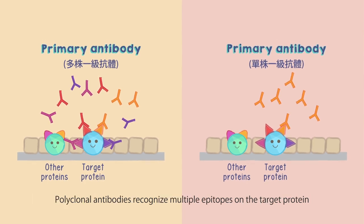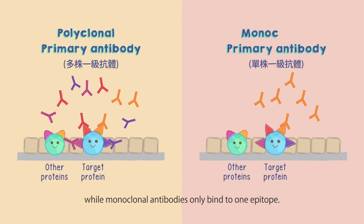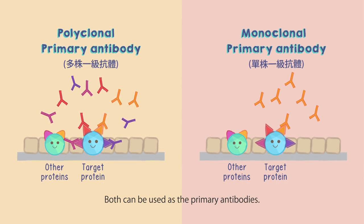Polyclonal antibodies recognize multiple epitopes on the target protein, while monoclonal antibodies only bind to one epitope. Both can be used as the primary antibodies.